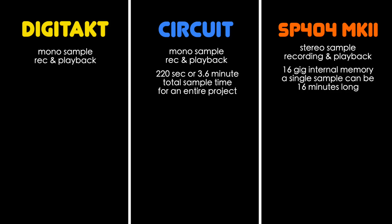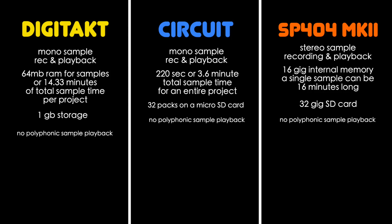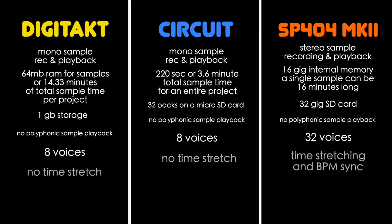The Digitakt has 64 megabytes of RAM per project, or 14.33 minutes of total sample time per project. In terms of total storage, the Digitakt has 1 gig of internal storage — not to be confused with the working memory of 64 megabytes. On the SP you can have a 32 gig memory card and load it into the 16 gigs working memory. On the Rhythm, packs are installed on the SD card via the Components software and loaded into working memory from the device. None of these devices offer polyphonic playback of a single sample. The SP has 32 voices versus 8 voices on the Digitakt and Circuit Rhythm. And when it comes to time stretching as well as BPM syncing your samples or loops, there's only one device that offers it — the SP-404 Mark II.